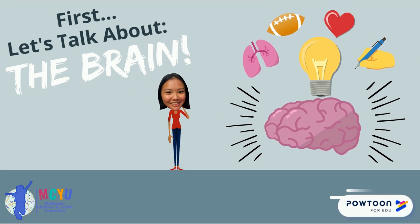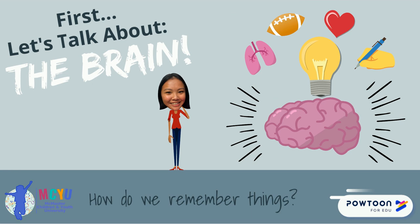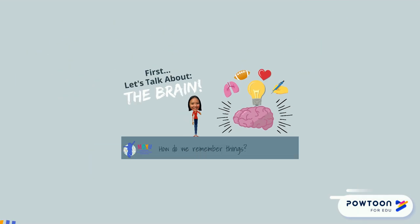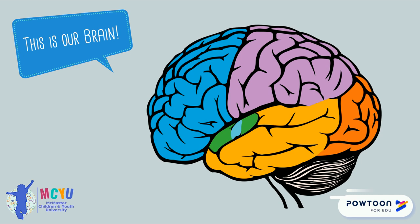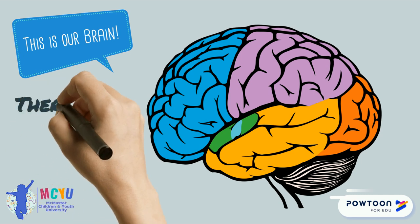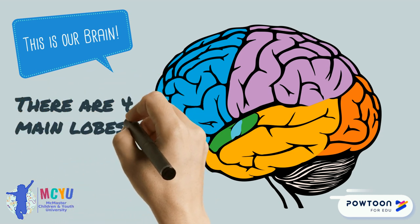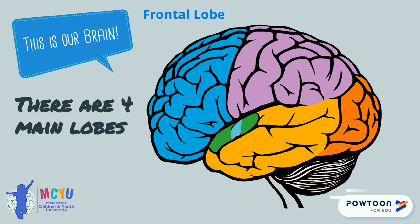Our brains are wonderful and capable of so many things, but how are we able to remember them all? This is a picture of the brain. The brain is divided into four main lobes: the frontal lobe, temporal lobe, parietal lobe, and finally the occipital lobe.